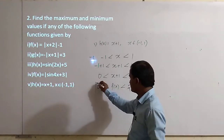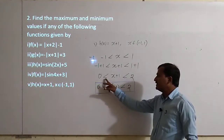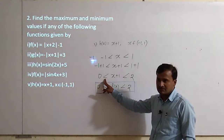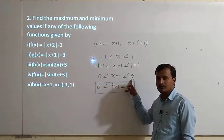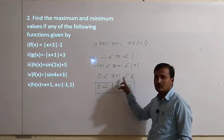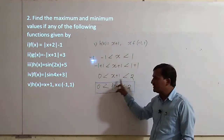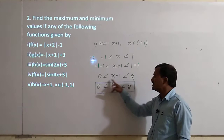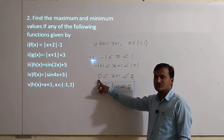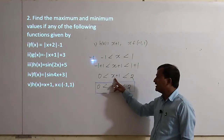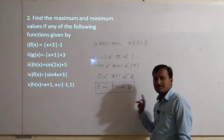Now, clearly you should observe that in this case the minimum value is not 0 and the maximum value is not 2, because here we are having open intervals. Instead, if we had less than or equal to or greater than or equal to, then the value of f of x would become equal to 0 and equal to 2, making minimum 0 and maximum 2.